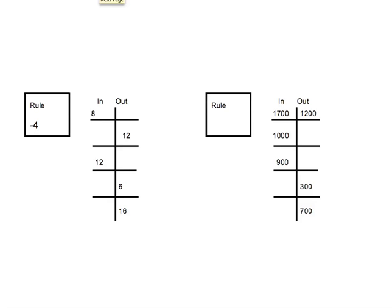So now it's time for you to practice on your own. You can think of it as fact families, or you could draw those nifty little arrows across the top and bottom to help you stay organized. Please copy down these two function machines and solve them. Push pause, then play again when you want to check your work.